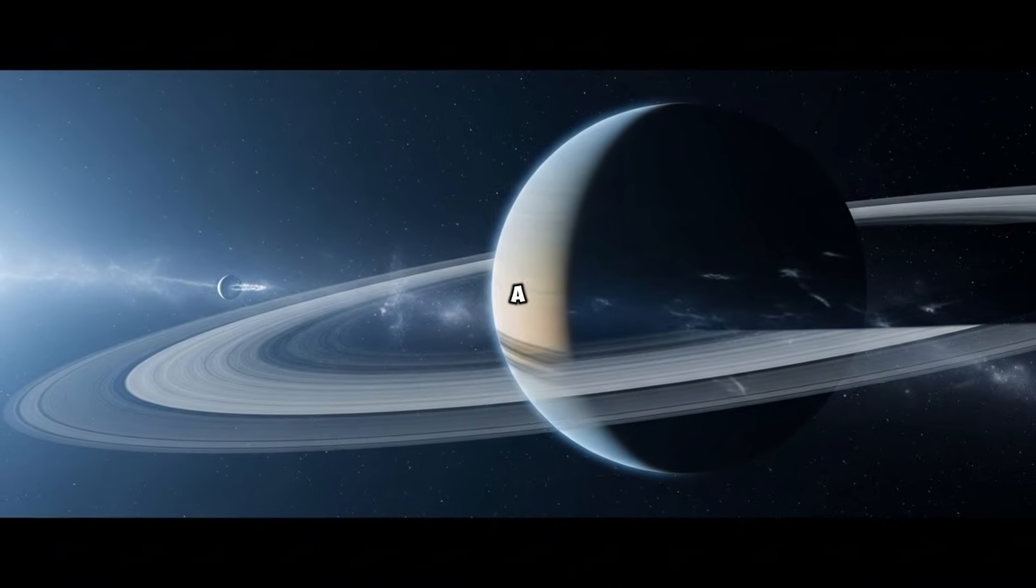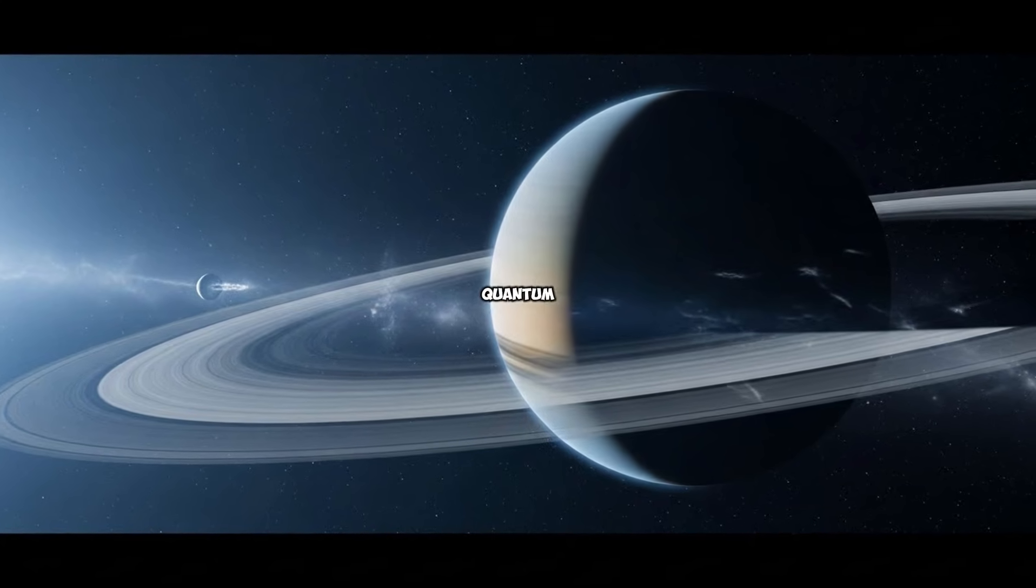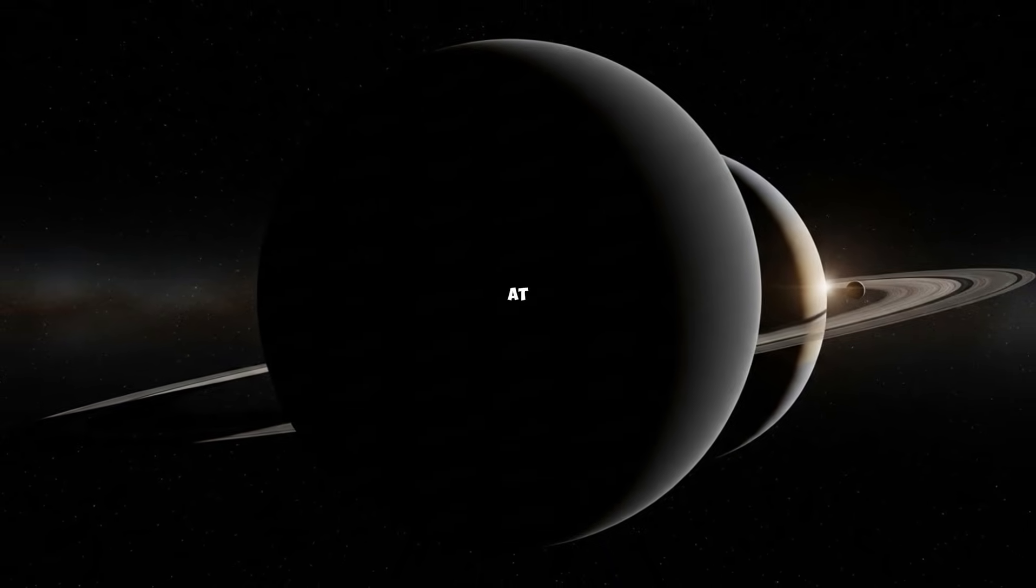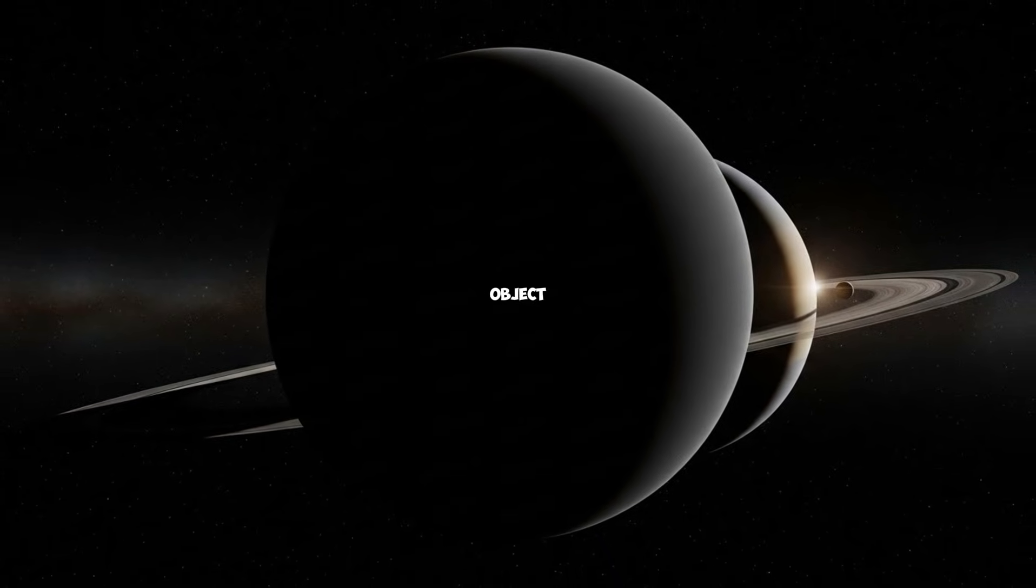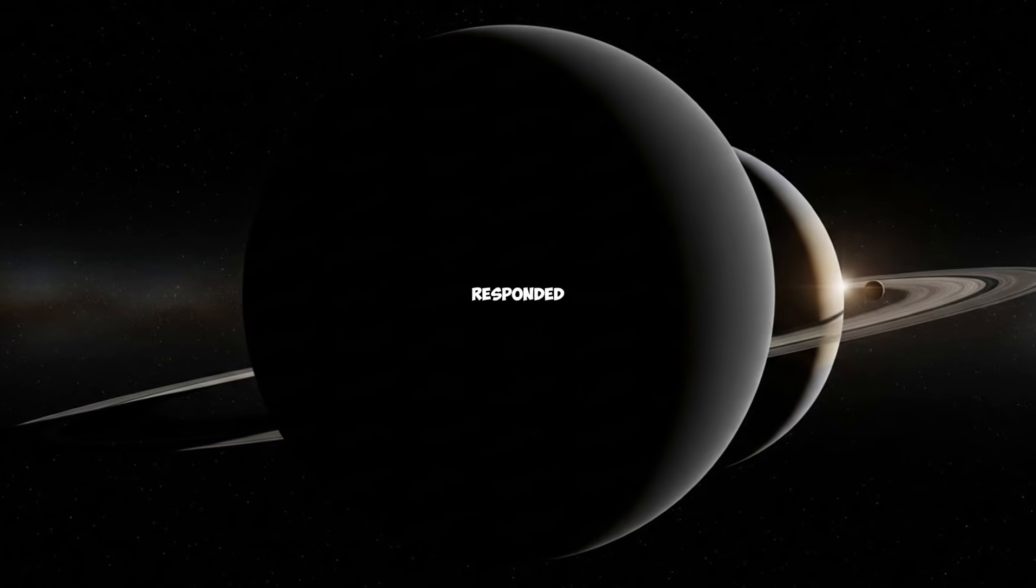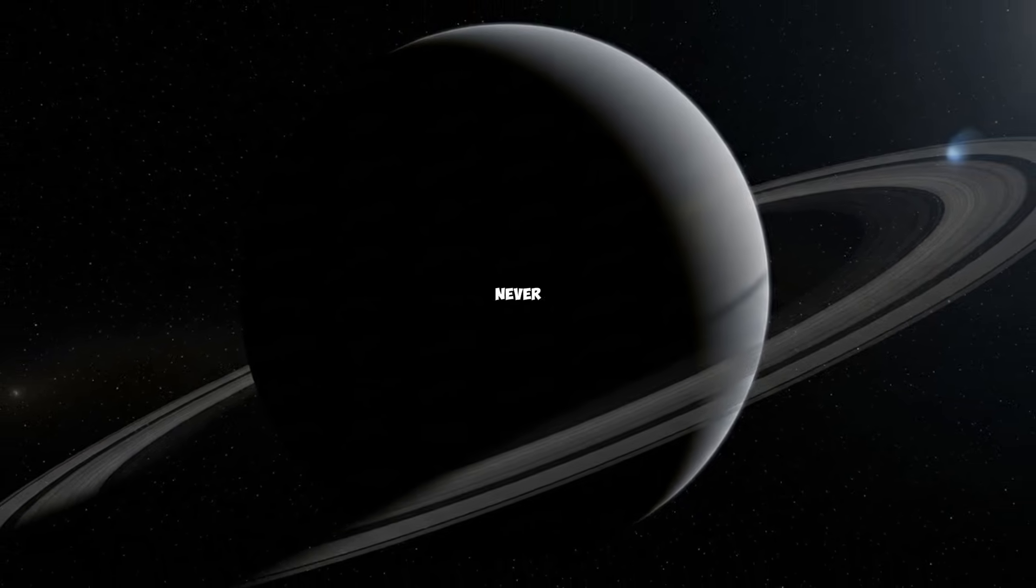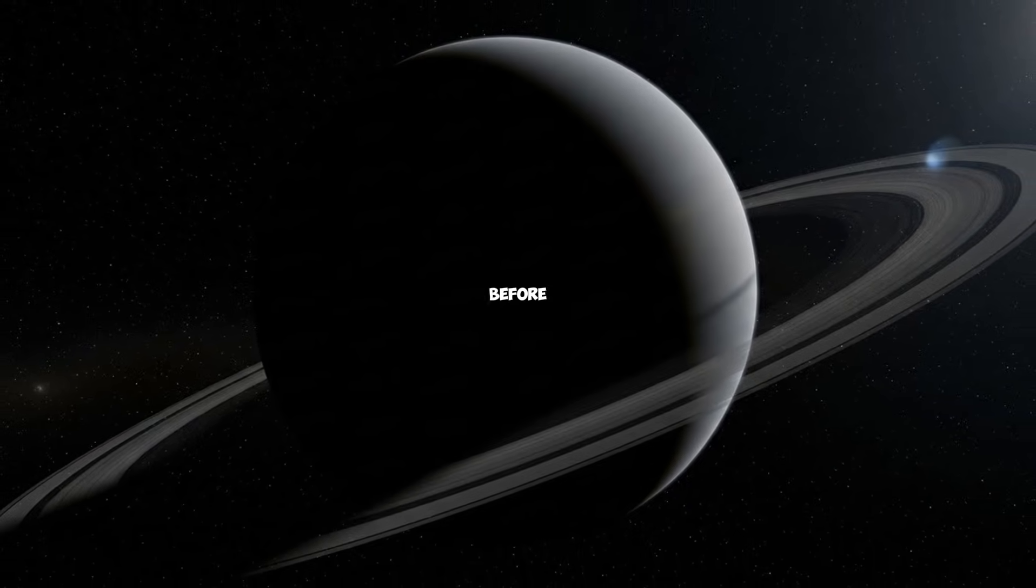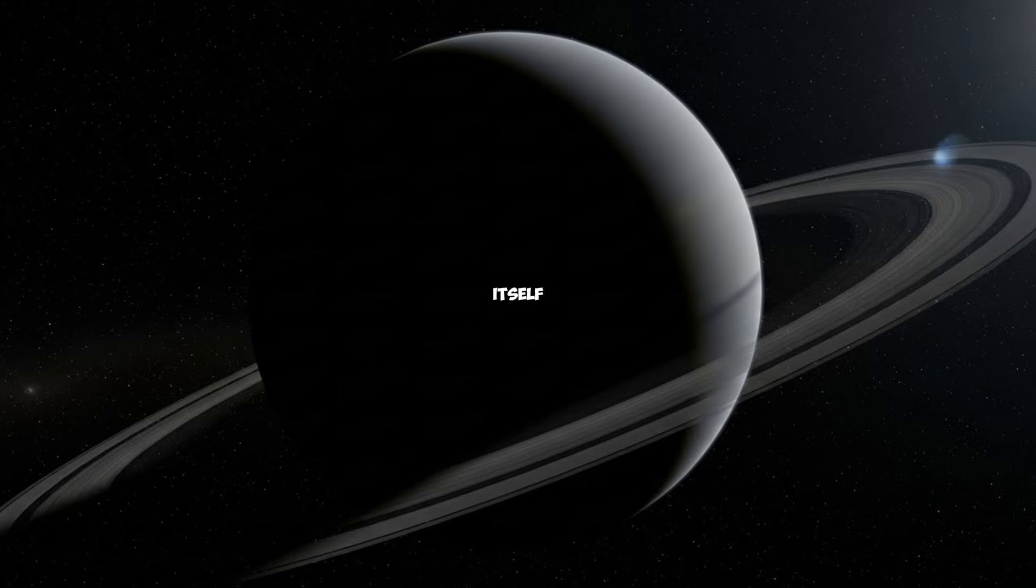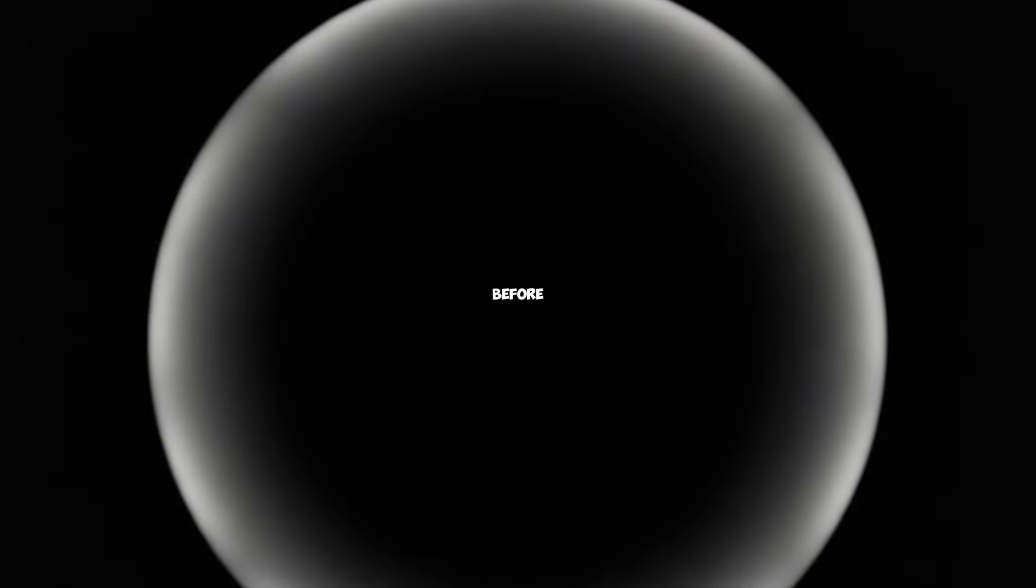They call it the Bugha Sphere. It doesn't move like a comet. It doesn't reflect light like ice. And three weeks ago, when a team of quantum acoustics researchers aimed a sequence of Sanskrit chants at a laboratory replica of this object, something impossible happened. The sphere responded, not with heat, not with light, but with something we've never seen in controlled physics before, a recursive harmonic cascade that folded back on itself, creating what one scientist described as an echo that arrived before the sound.